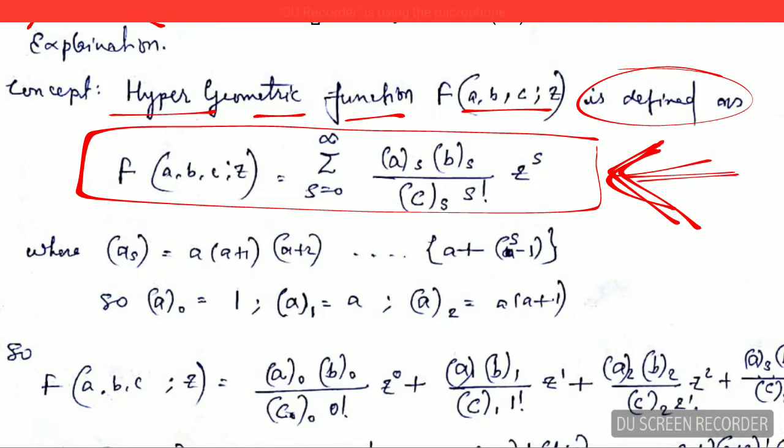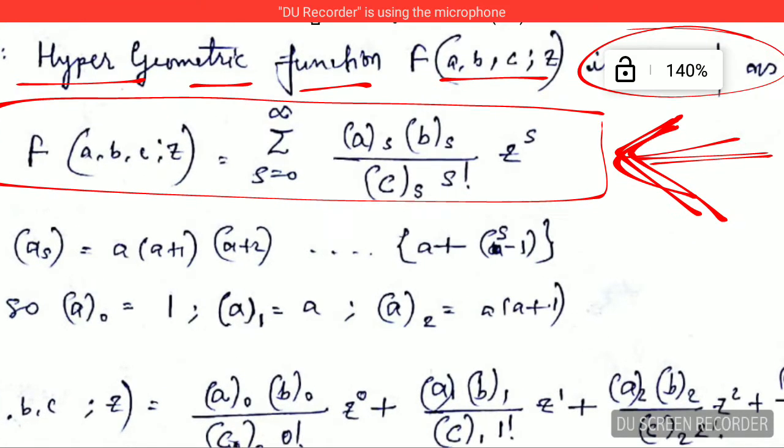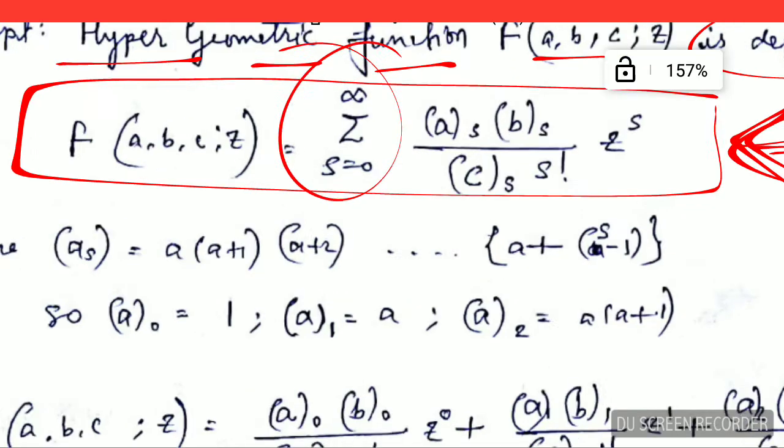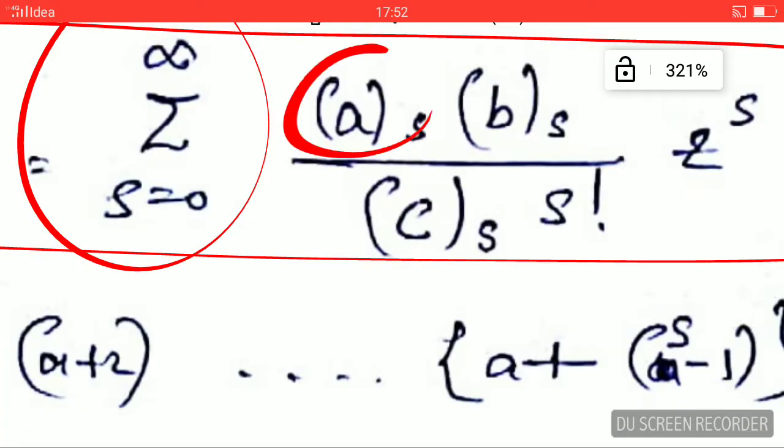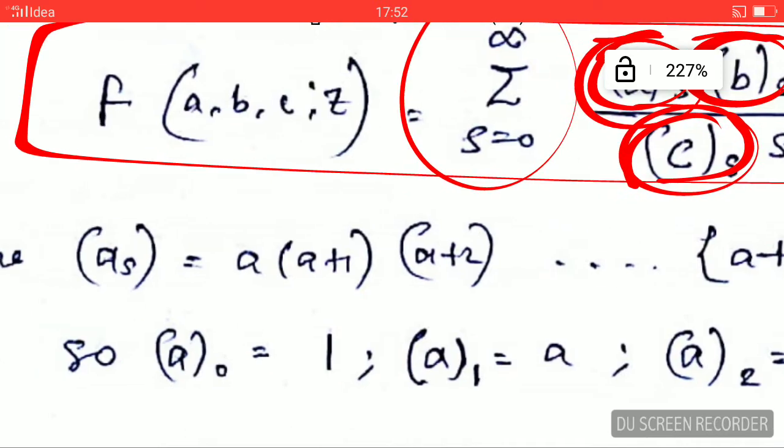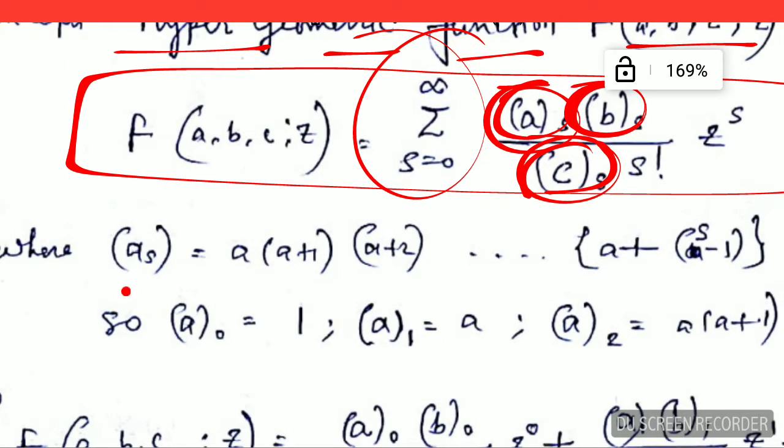In this function, this is the summation from s equals 0 to infinity, and here you can see there are other quantities like a_s, b_s, c_s. I will explain what is this a subscript s, and then b_s and c_s are all similar terms. So a_s is defined by this equation.